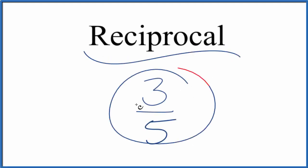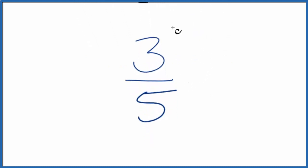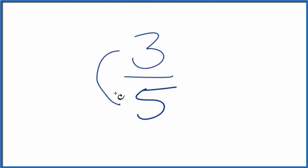Let's find the reciprocal for 3 fifths. When we're looking to find the reciprocal, we take the numerator, the number on top, and flip it with the denominator, the number on the bottom.